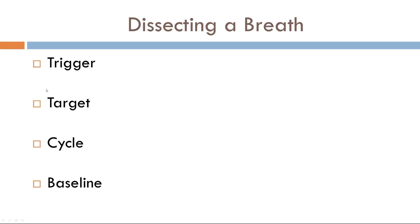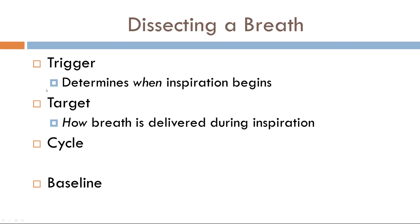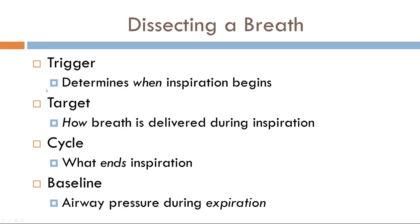The trigger variable is the variable that determines when inspiration begins. The target is how the breath is delivered during inspiration — is it delivered fast or slow? The cycle variable is what tells the ventilator to stop inspiration, what ends inspiration. The baseline phase is the airway pressure during expiration. Importantly, the trigger, target, and cycle phases are all during inspiration, while the baseline phase is during expiration.